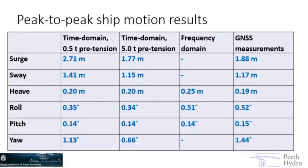The surge predictions using half a tonne and five tonne pretension were either side of the measurements, and similarly for sway. We also have frequency domain results, which can be used for the vertical motions — heave, roll and pitch — but certainly not for horizontal motions. Frequency domain is a pretty good approximation for vertical motions, but it doesn't account for fender friction or second order wave loads. Generally the comparison is pretty good. Yaw was the only one under-predicted, probably because there was a peak in harbour resonance at a period close to the natural yaw period that was slightly under-predicted.